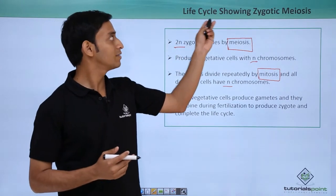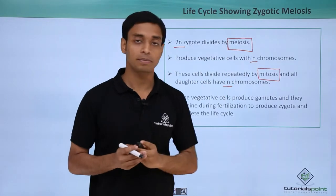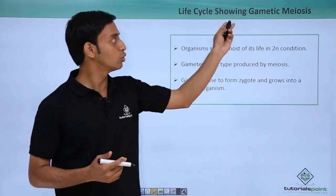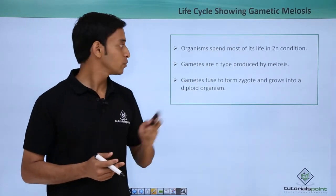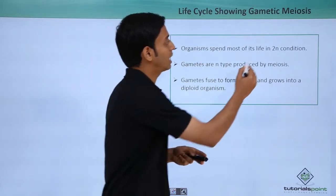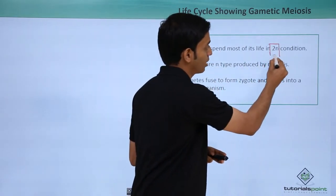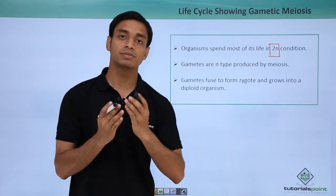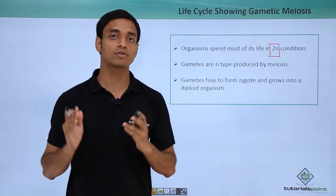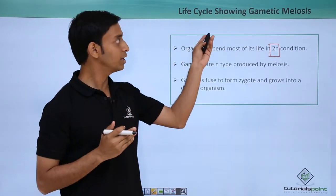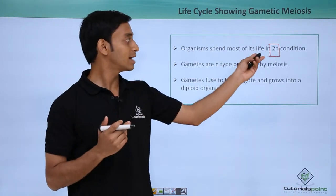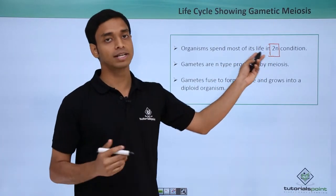We have discussed the life cycle which shows zygotic meiosis. Now let us talk about the next type of life cycle which shows gametic meiosis. It is a bit different — here the organism spends most of its life in the 2N condition. In the previous case, the organism spent most of its time with N number of chromosomes, that is haploid. But here in gametic meiosis, the organism spends most of its time in a diploid condition.